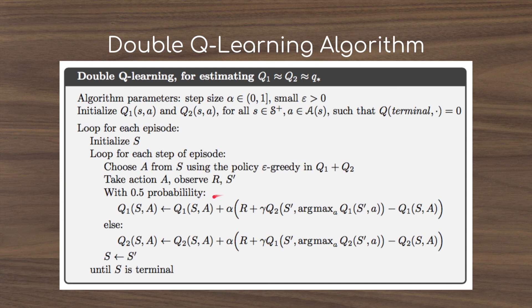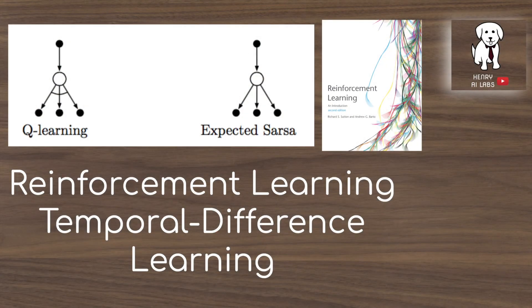Double Q-learning overcomes the maximization positive bias by maintaining two separate tables, Q1 and Q2, of state-action pairs. With a coin-flip probability, we either use Q1 to select the maximum action during the bootstrap step and evaluate that state-action pair with Q2, or vice versa. Thanks for watching this explanation of temporal difference learning from chapter six of Introduction to Reinforcement Learning by Richard Sutton and Andrew Barto. Please stay tuned as we go through chapters seven through seventeen, and subscribe to Henry AI Labs for more deep learning and AI videos.